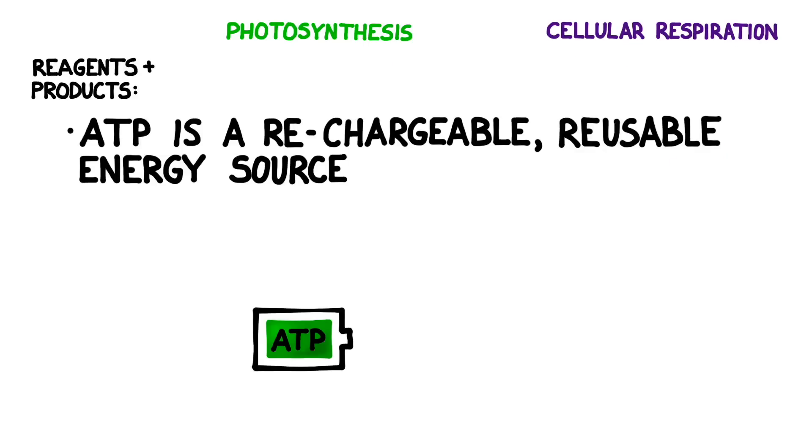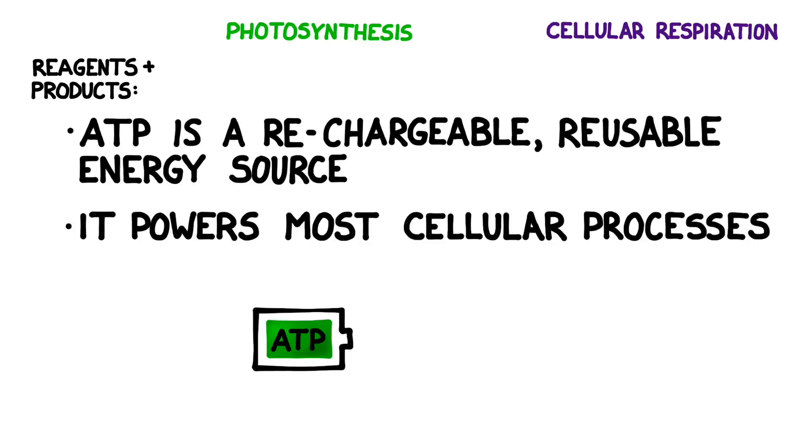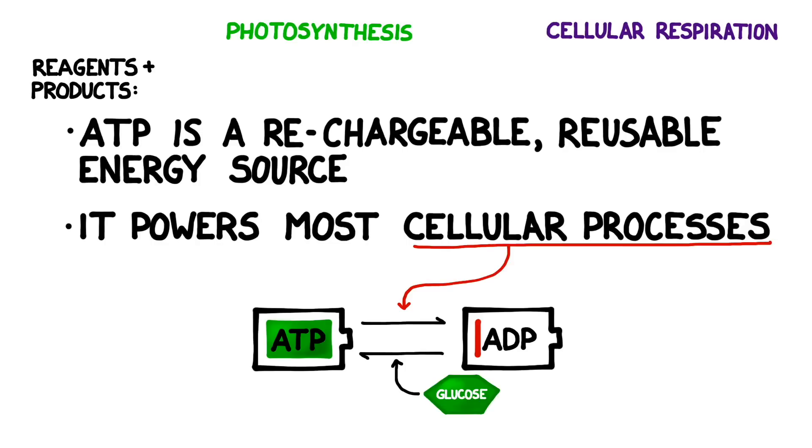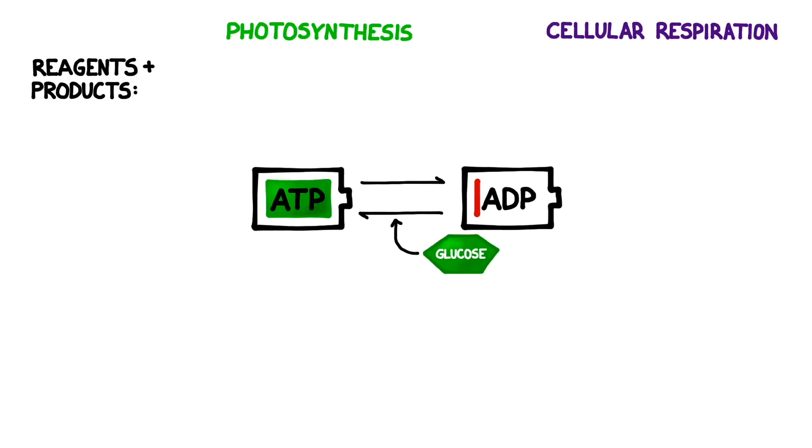Now let's talk reagents and products. One of the most important molecules in biology is a rechargeable, reusable energy source called ATP. The energy stored in ATP's bonds power the vast majority of cellular processes, but in the process of powering them it gets reduced to its low energy form called ADP. However, through a complex series of chemical reactions and a little glucose we can actually recharge the ADP molecule back into ATP. We call this recharging process cellular respiration.